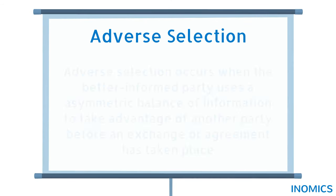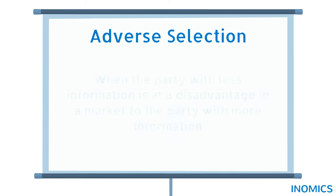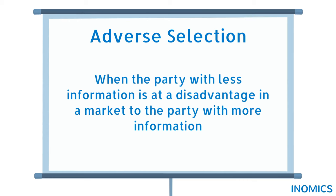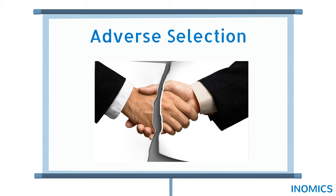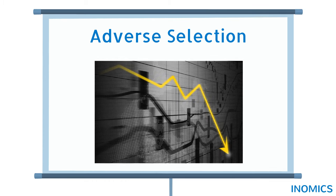Adverse selection occurs, however, when the better informed party uses the asymmetric balance of information to take advantage of another party before the exchange or agreement has taken place. In other words, when the party with less information is at a disadvantage in a market to a party with more information. The unequal access to information can lead to a breakdown in the ability of buyers and sellers to agree the price or quantity of a good or service in any given market. Market exchanges consequently become less efficient and, in extreme cases, adverse selection can lead to market failure.